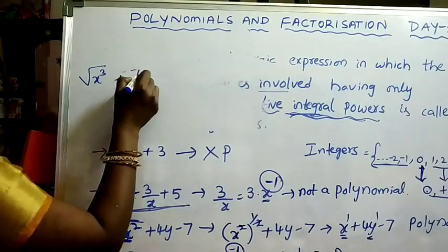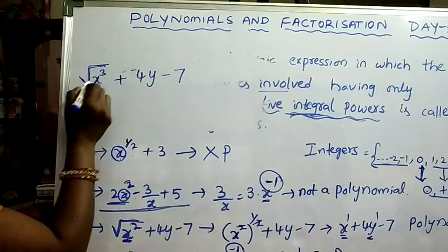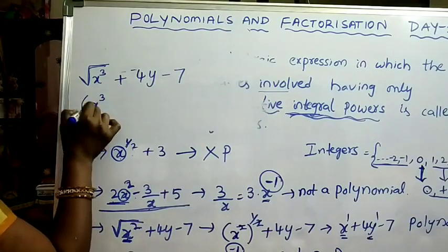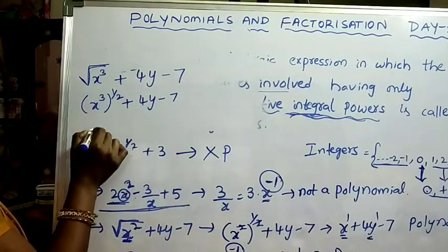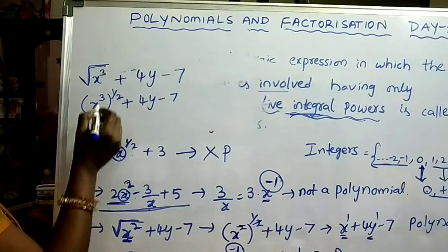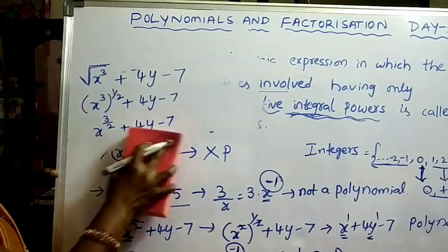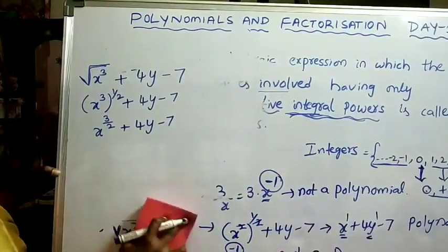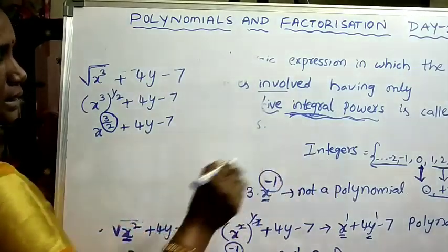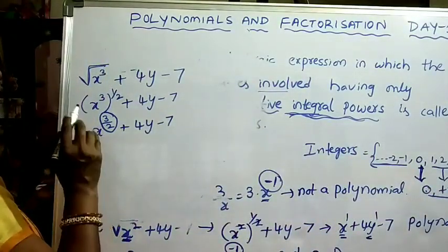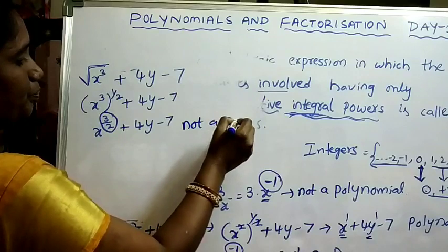Consider 2x³ plus 4/(−7) under square root of x³. This can be written as x³ to the power 1/2 plus 4/(−7), which equals x^(3/2) plus 4/(−7). So x has power 3/2. Since 3/2 is not an integer, it is not 0 or a positive integer. Therefore this expression is not a polynomial.